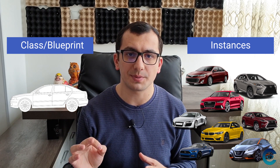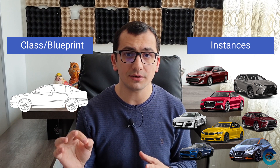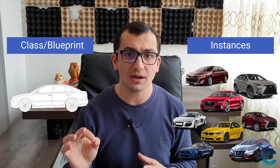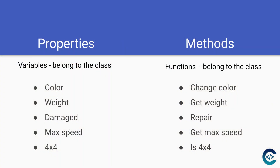And these are properties — like color, manufacturer, and so on. Here are examples of properties on the left side: color, weight, damaged, max speed, and 4x4. The properties can have different data types: color is a string, weight is a number, damaged is a boolean, max speed is also a number, and 4x4 is a boolean — it's just true or false.